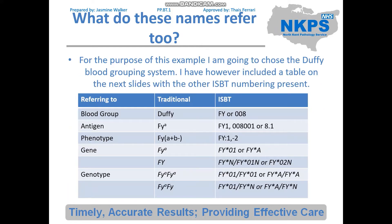I'm going to go through the Duffy blood grouping system to explain what we've just covered, because it was a bit confusing. When we talk about blood group and blood grouping systems, a lot of people think ABO, but what we actually mean is a blood grouping system is something like KEL, Duffy, or MNS. ABO is a blood grouping system, but it's not the only one. In the case of Duffy, the traditional term is 'Duffy', and the ISBT would denote the system as FY or 008.